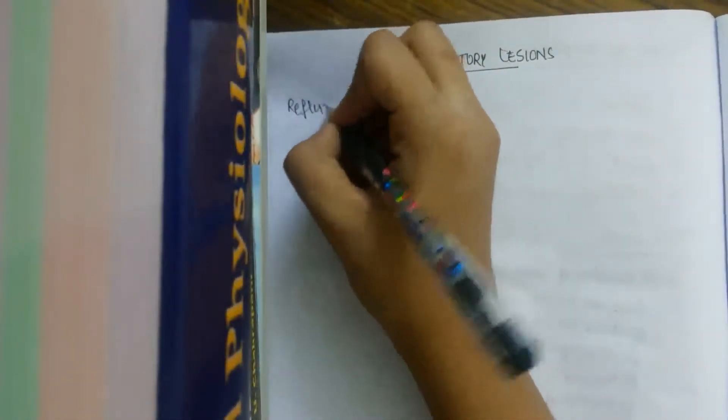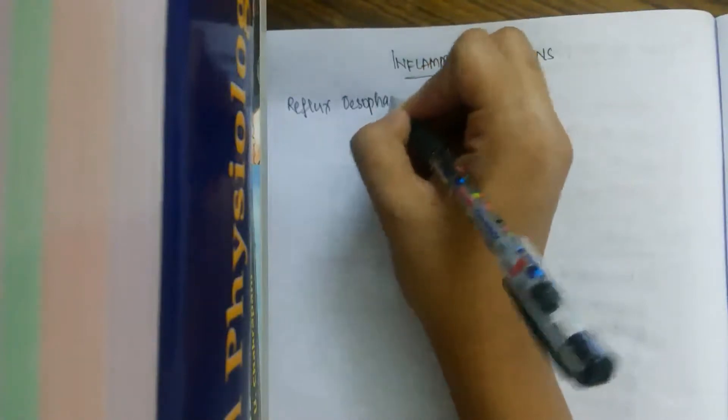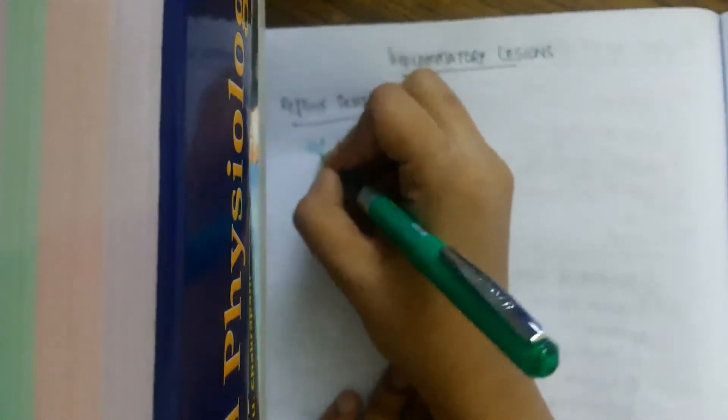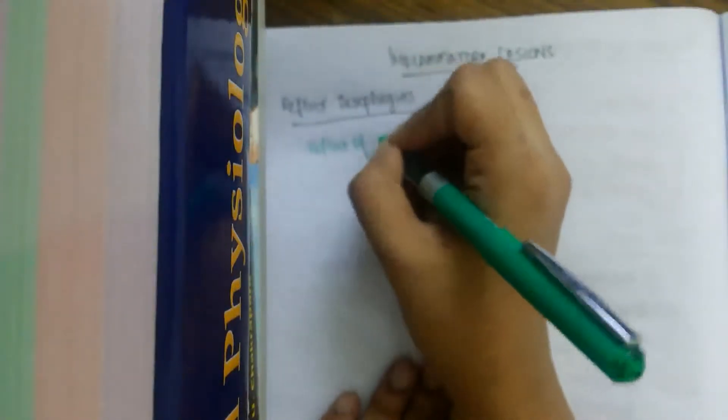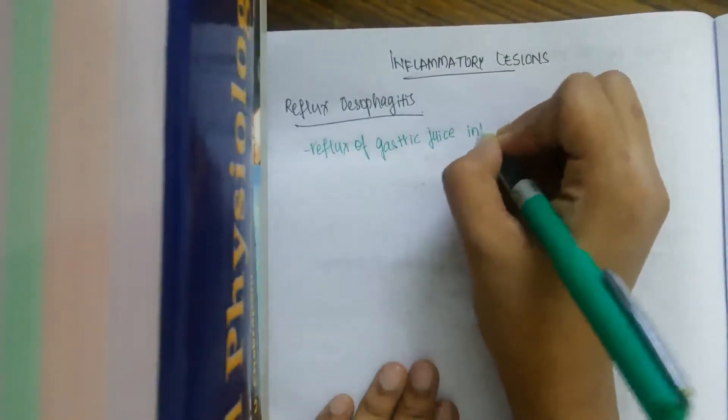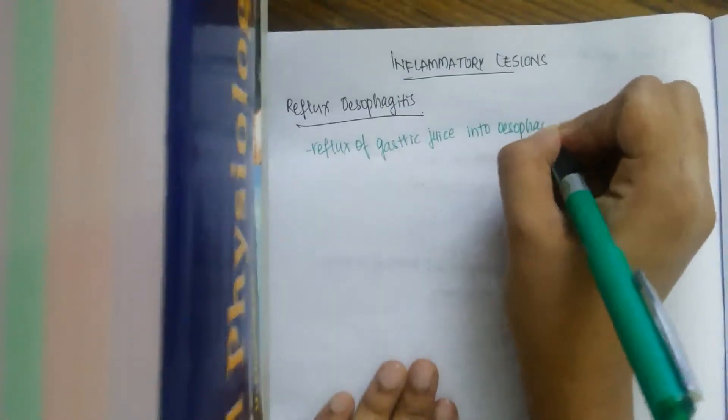First let us deal with reflux esophagitis, or it can also be called gastroesophageal reflux disease. What is the main cause of reflux esophagitis? The major cause is reflux of gastric juice into esophagus.